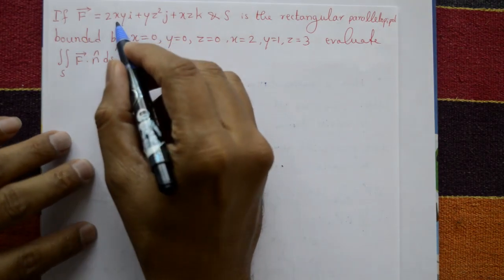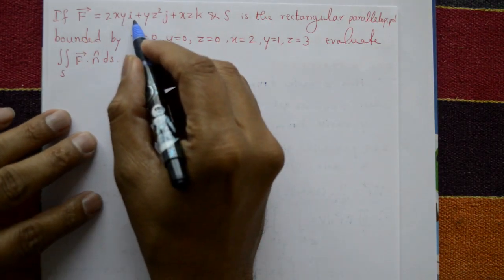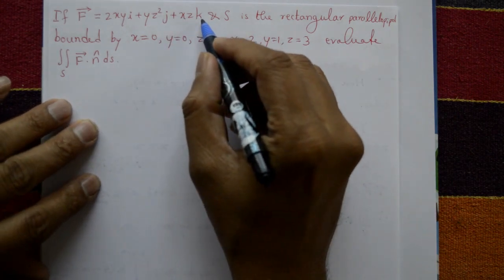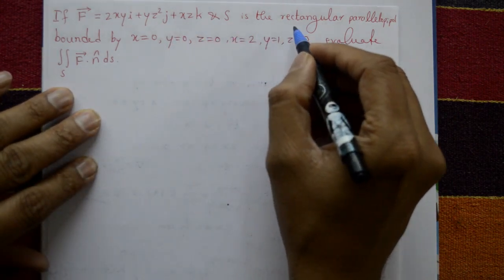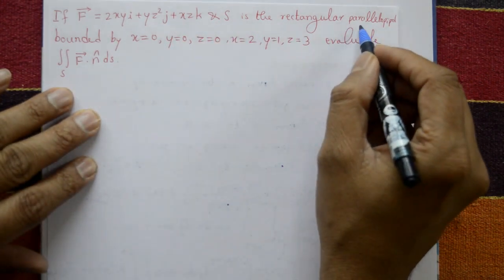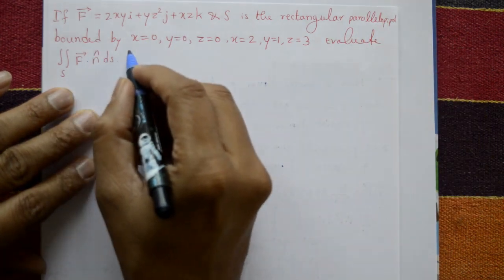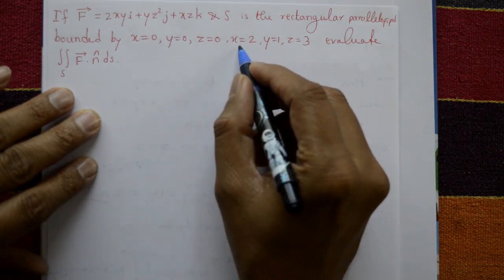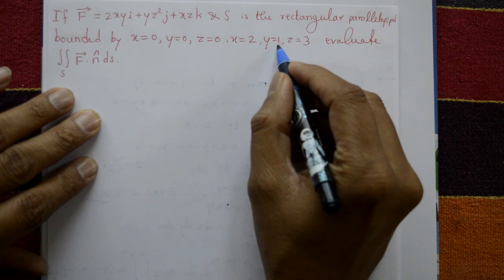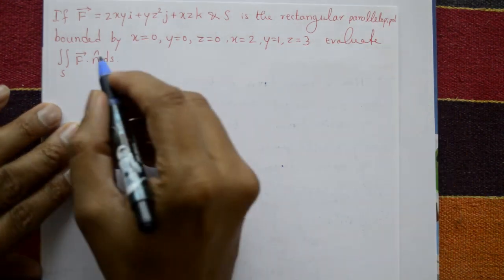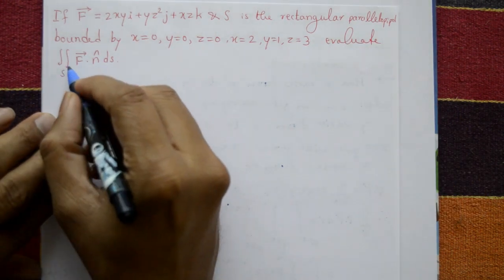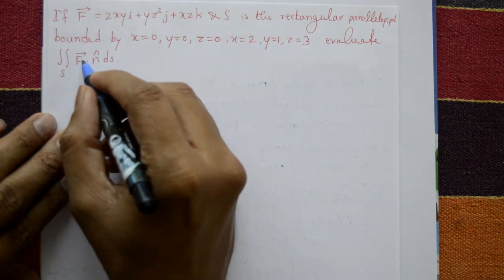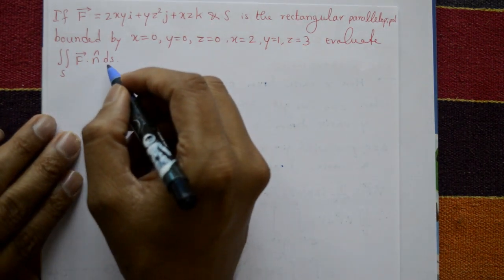If vector F is equal to 2xy i plus yz² j plus xz k, and S is the rectangular parallelepiped bounded by x=0, y=0, z=0, x=2, y=1, z=3, evaluate the surface integral over S of F dot n-cap dS.